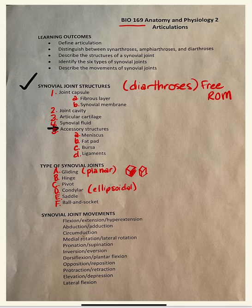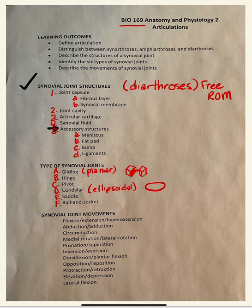For a gliding joint, this surface would articulate with that surface — two flat surfaces. Ellipsoidal, to remind you, looks like an ellipse. It's not quite round like a ball and socket, but is ellipsoidal — it kind of looks like an oval.